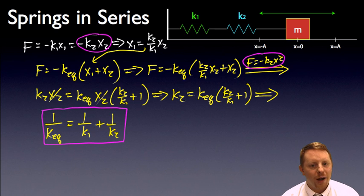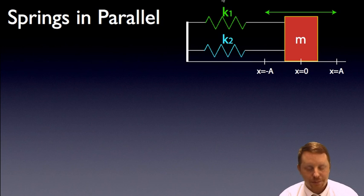Right away, you could probably start to guess what's going to happen when we look at springs in parallel. If these are like capacitors in series, or resistors in parallel, we expect that the springs in parallel are going to look like capacitors in parallel, or resistors in series. They should add. Let's see if we can't prove that.